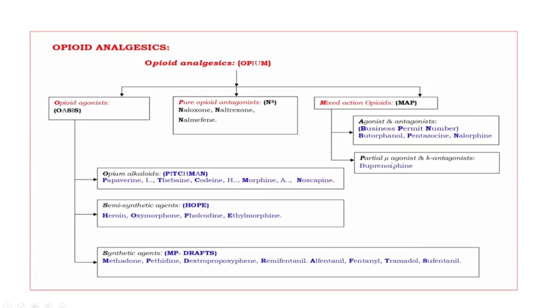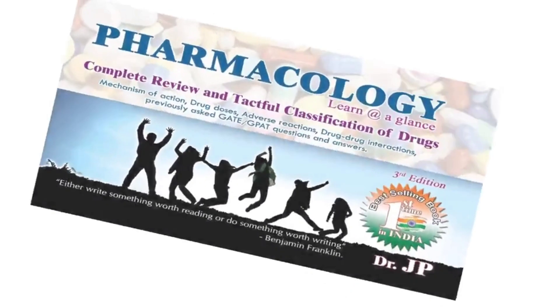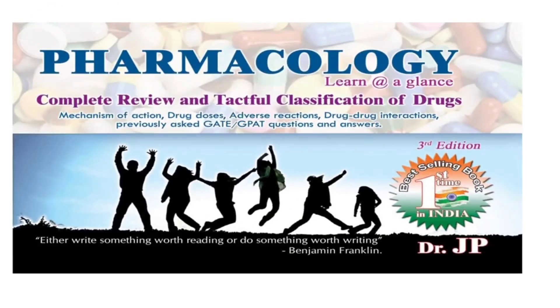Next, partial mu agonist and kappa antagonist — buprenorphine. I hope you like this video. If you want to purchase the book, the link is provided in the description. For more videos, please like, share, and subscribe to my channel. Thank you very much.